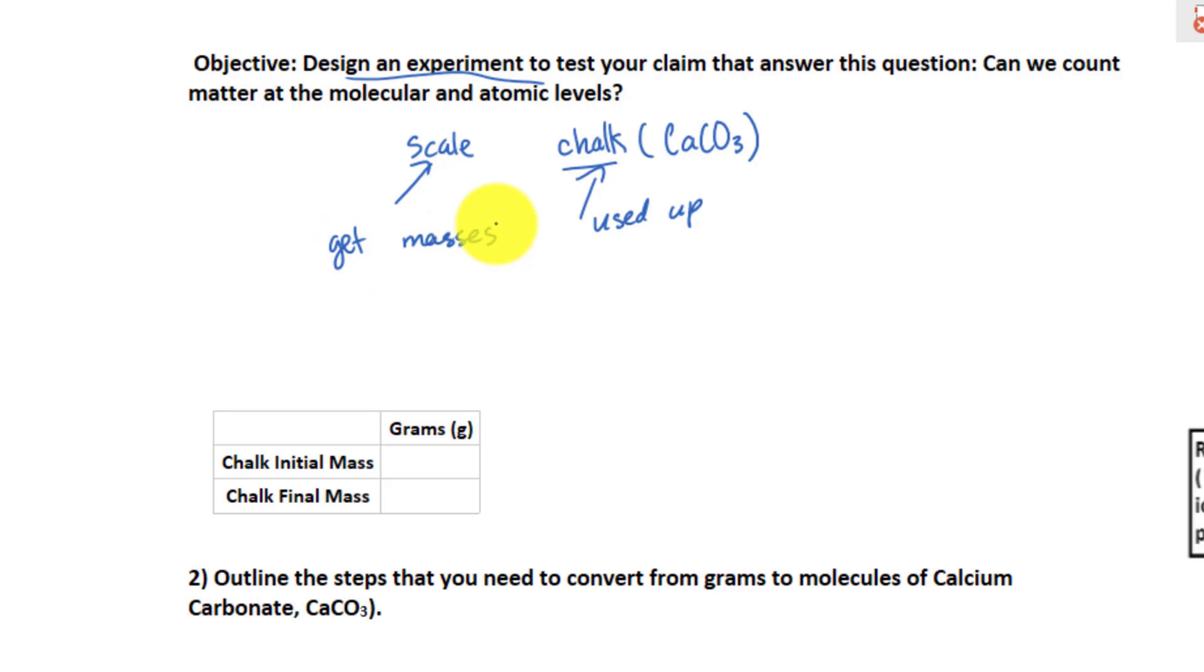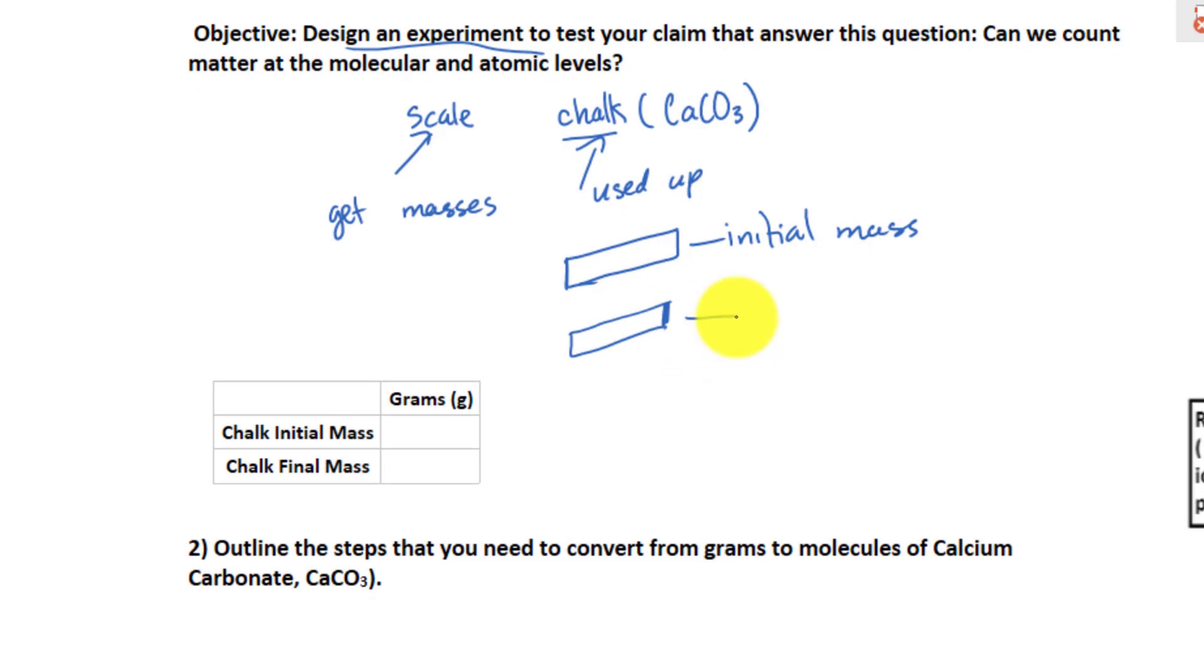When we have a piece of chalk, this piece of chalk would have an initial mass. And what happened to this piece of chalk when you use it to write your message? You are going to use the chalk to write it, and therefore, the mass is going to decrease. We can consider this as your final mass.